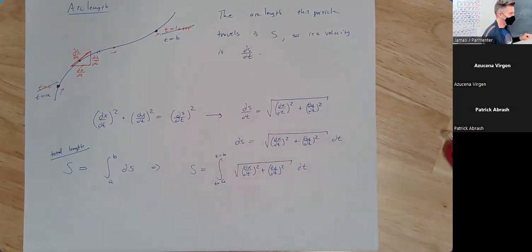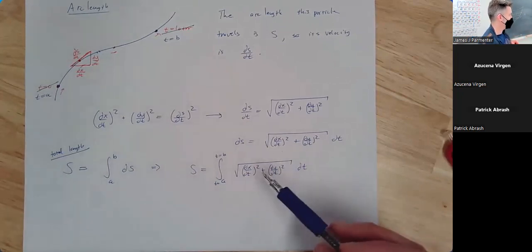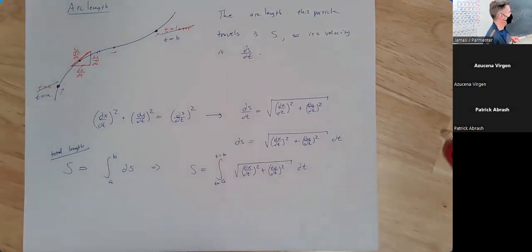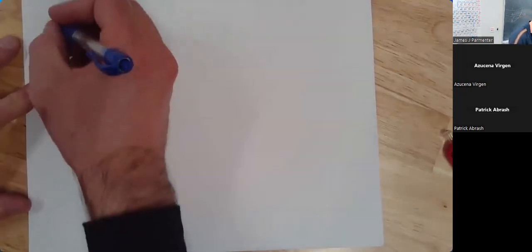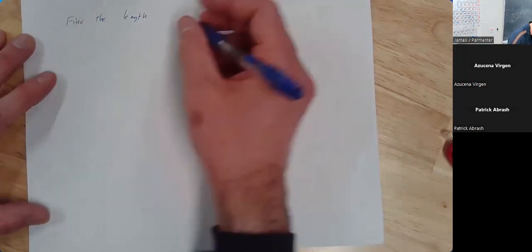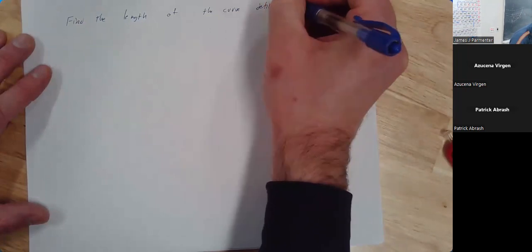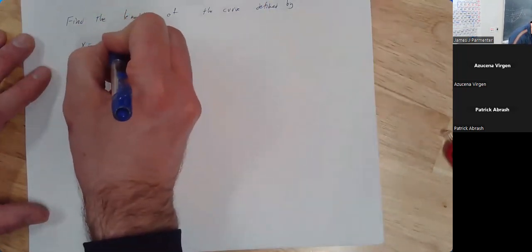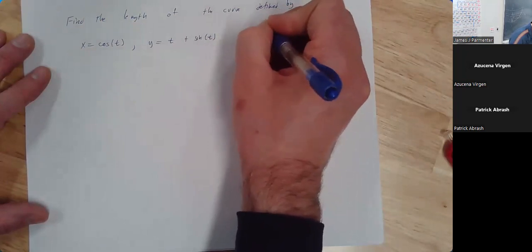People often save the parametric version until they get to polar and parametric equations at the end of Calc 2, but we're going to show it now. So here's an arc length formula. Let's find the length of the curve defined parametrically by x equal to cosine of t, y equal to t plus sine of t, where t goes from 0 to pi.